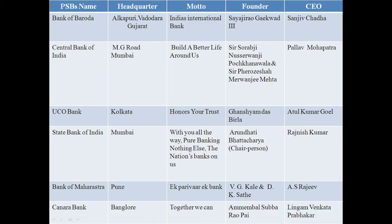Here is a list of all the public sector banks as of 2020. The first name in this list is BOB i.e. Bank of Baroda. The motto of this bank is 'India's International Bank.' This bank was founded by Sayaji Rao Gaekwad III on 20th July 1908. This bank's main headquarter is in Alkapuri, Vadodara, Gujarat. The current CEO and MD of Bank of Baroda is Mr. Sanjeev Chadha.